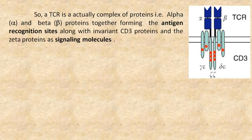A TCR is actually a complex of proteins — alpha and beta proteins together forming the antigen recognition sites — along with invariant CD3 proteins and the zeta proteins as signaling molecules.